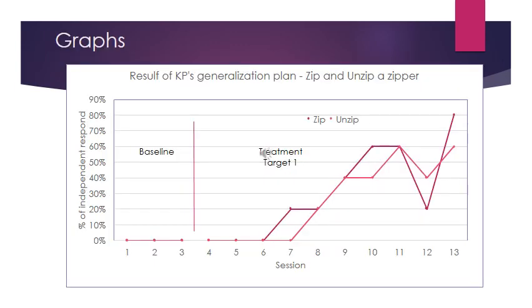Here are the results of KP's generalization plan so far. The first three days are the baseline data collection, and he gave no independent responses. In sessions 4, 5, and 6, he still could not do it. However, from sessions 6 to 13, the percentage of independent responses is increasing. KP has not yet mastered the first target, but the results show he is making progress, and I believe we can move on to target 2 in the next few sessions.